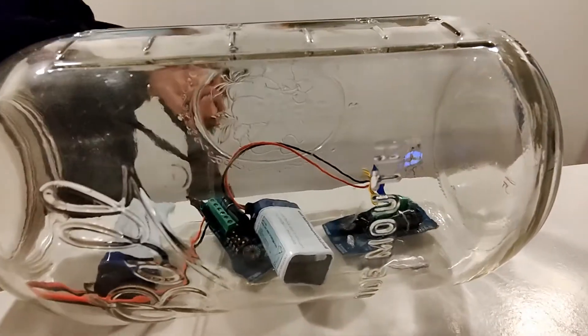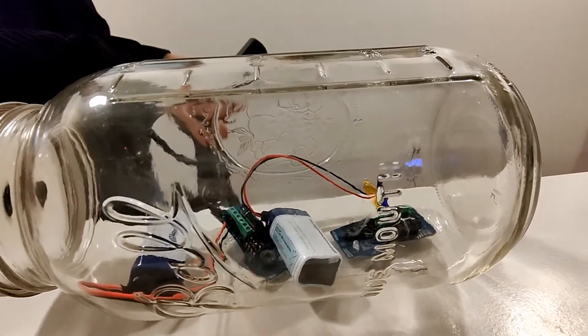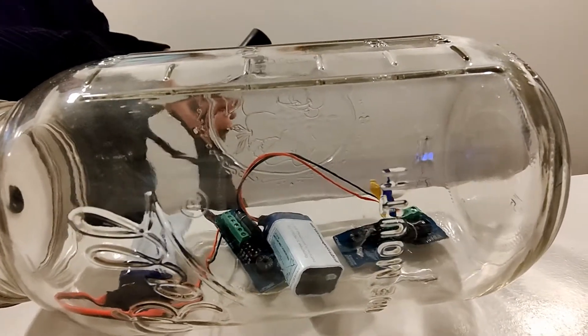Okay, we are going to vacuum test these two Missile Works RRC 2 Plus altimeters. I've got them hooked up to Christmas lights and batteries.